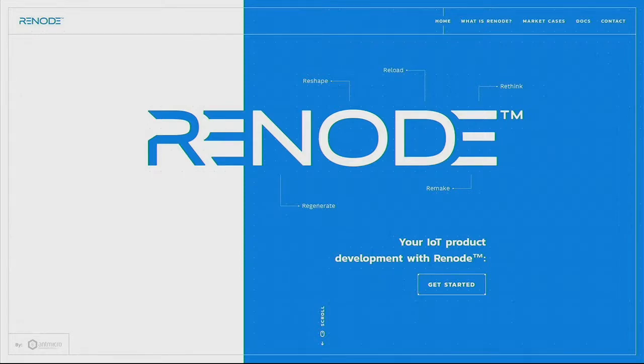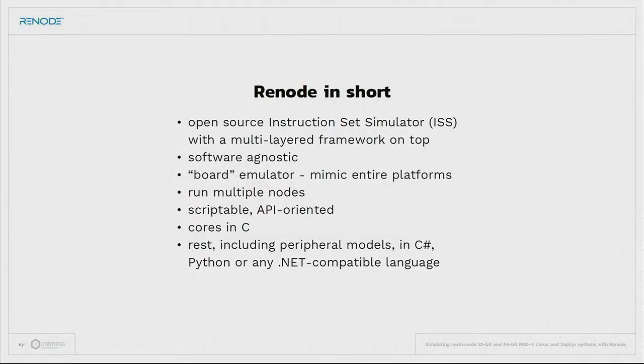I'm talking about Renode today. There are some technological things that we've just published that I'll be mentioning, but one other important aspect is that we have a new website, so be sure to check it out — it's just Renode.io. In short, we're an open source instruction set simulator, but also a whole framework built on top of that, so we don't just simulate cores — we do much more than that. A lot of people have been mentioning open source as if it was something different than commercial; we don't agree with that. We are an open source framework, but our company provides commercial services to build whatever you want on top of the open source Renode framework.